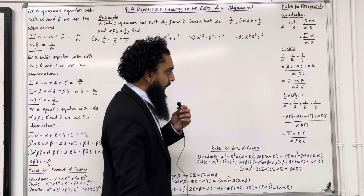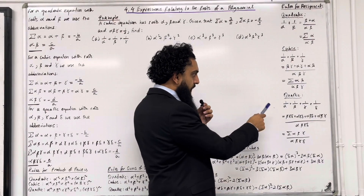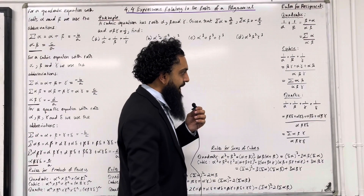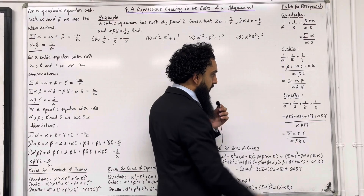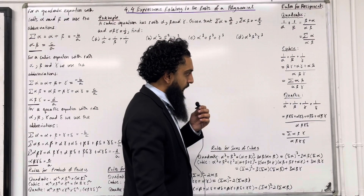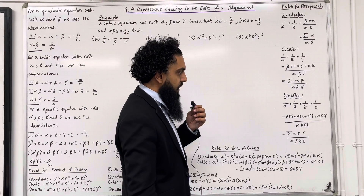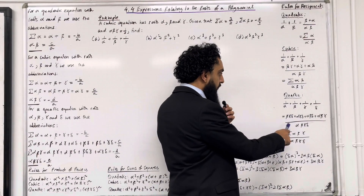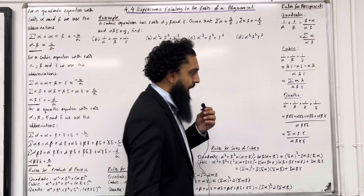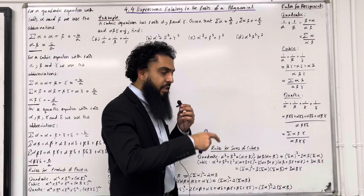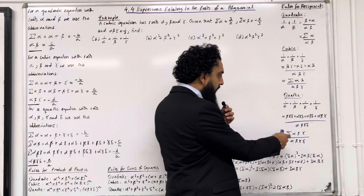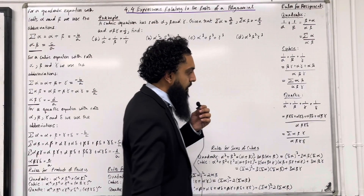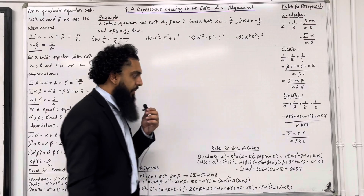Finally, for a quartic, 1 over alpha plus 1 over beta plus 1 over gamma plus 1 over delta is equal to (beta gamma delta plus alpha gamma delta plus alpha beta delta plus alpha beta gamma) all over alpha beta gamma delta. The numerator is the same as writing sum of alpha beta gamma, over alpha beta gamma delta.